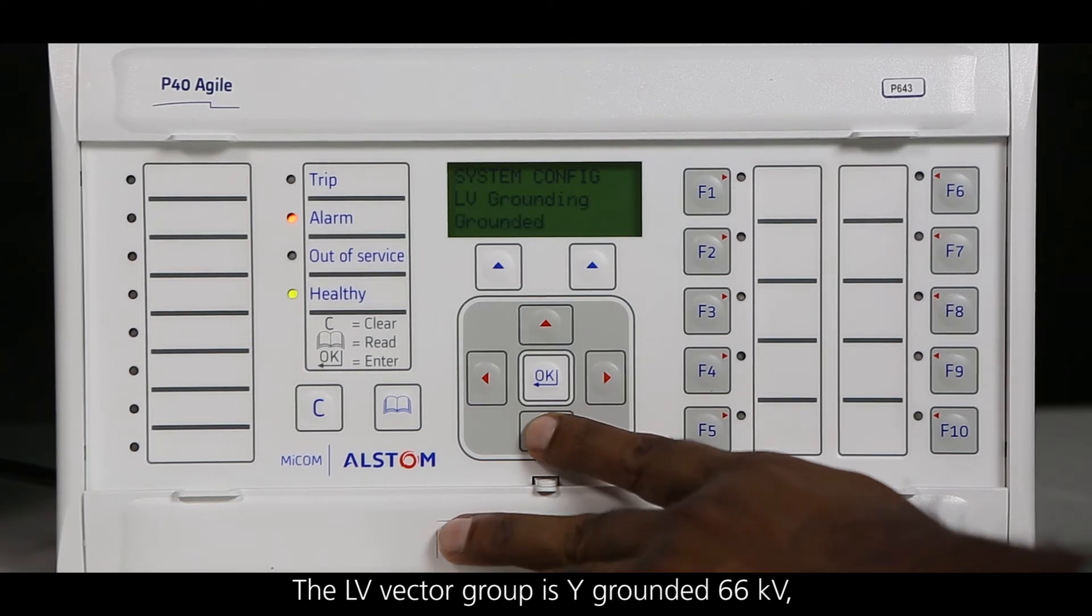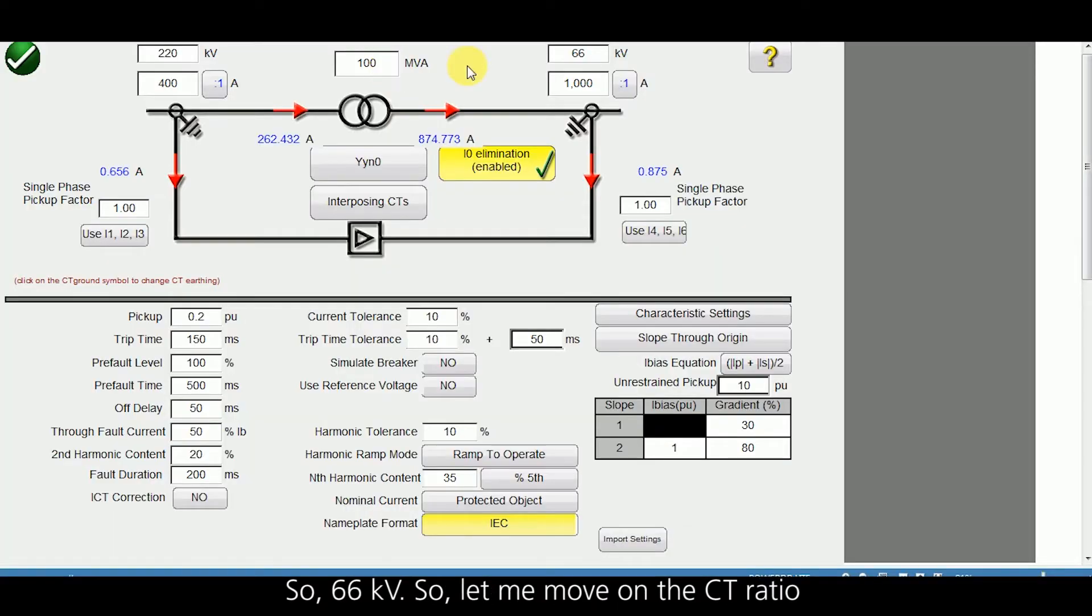The LV vector group is Y grounded, 66 kV.